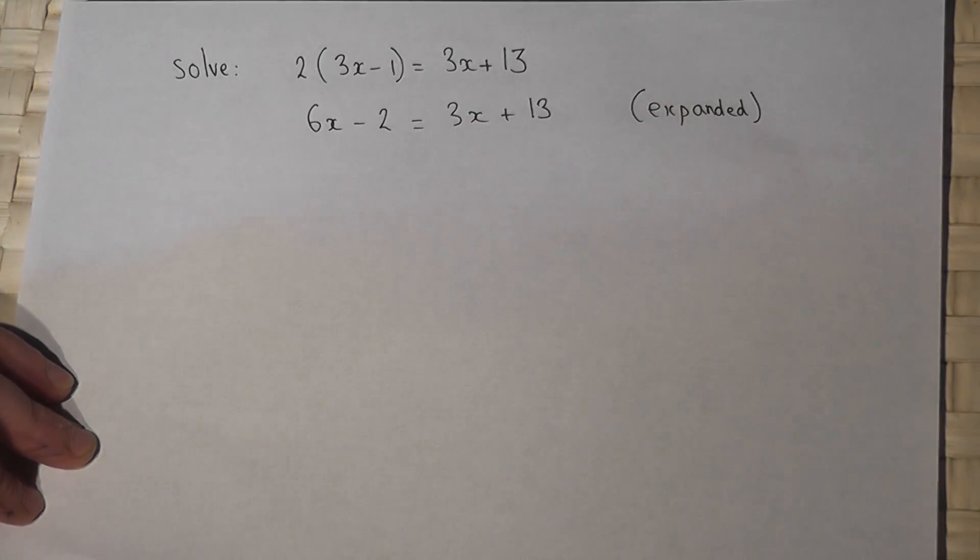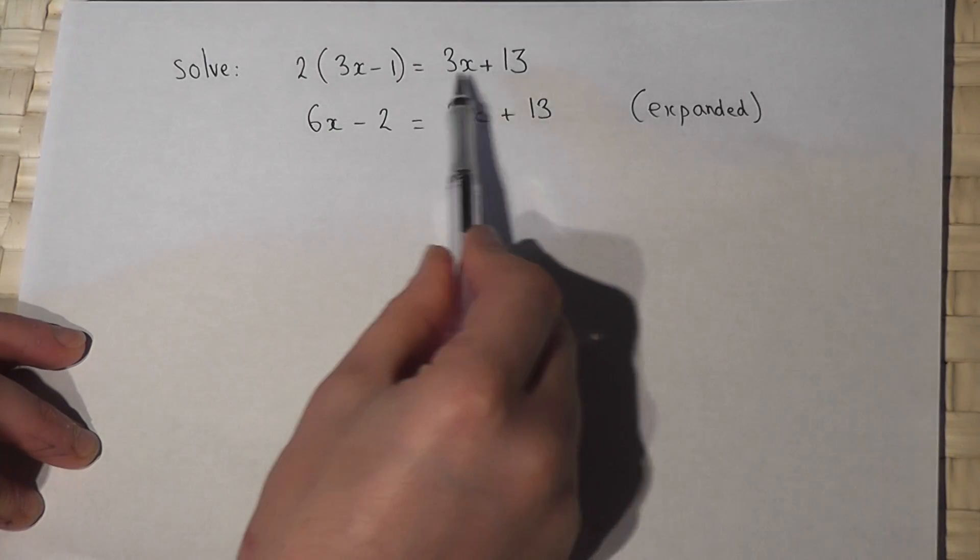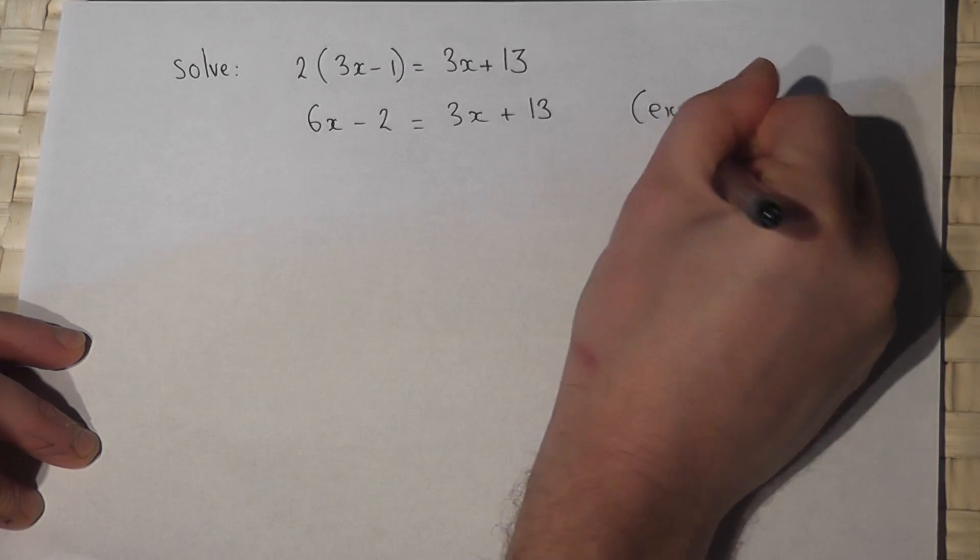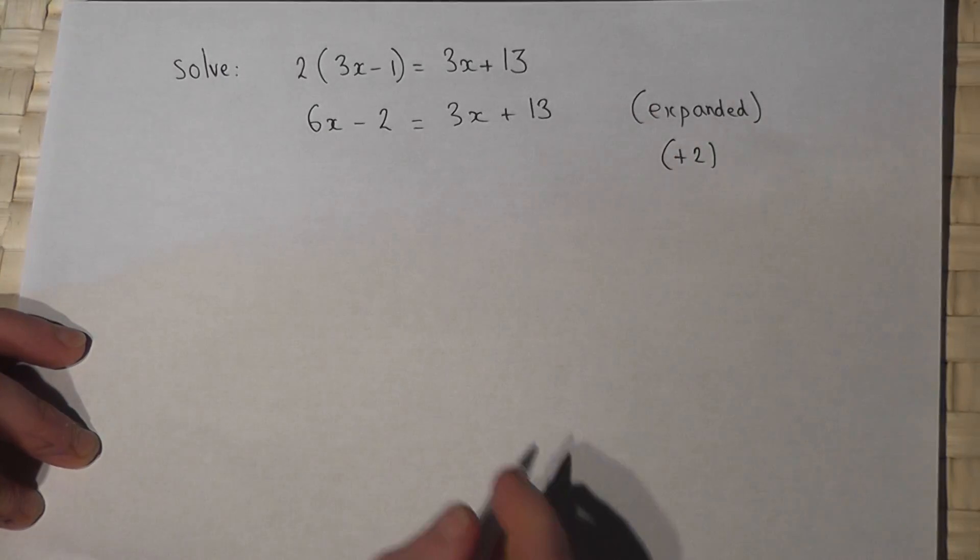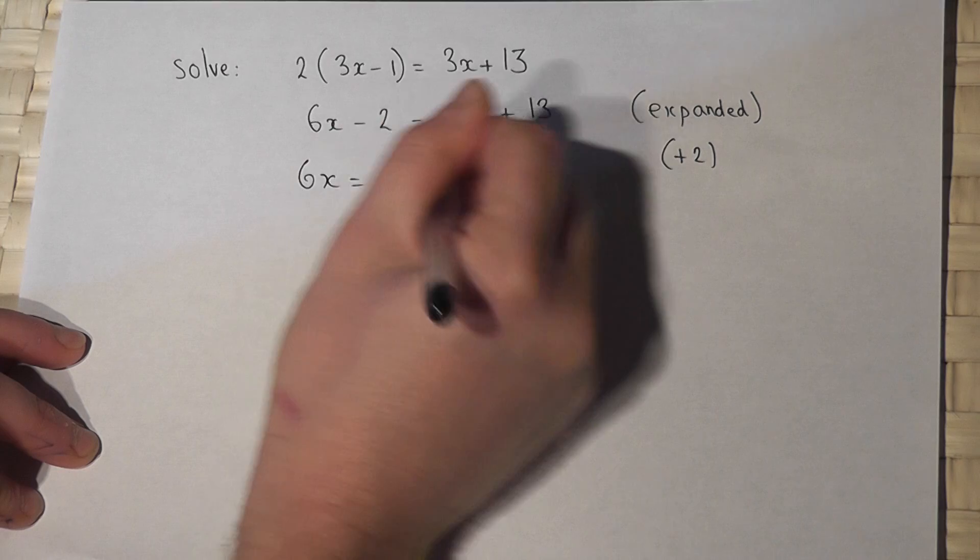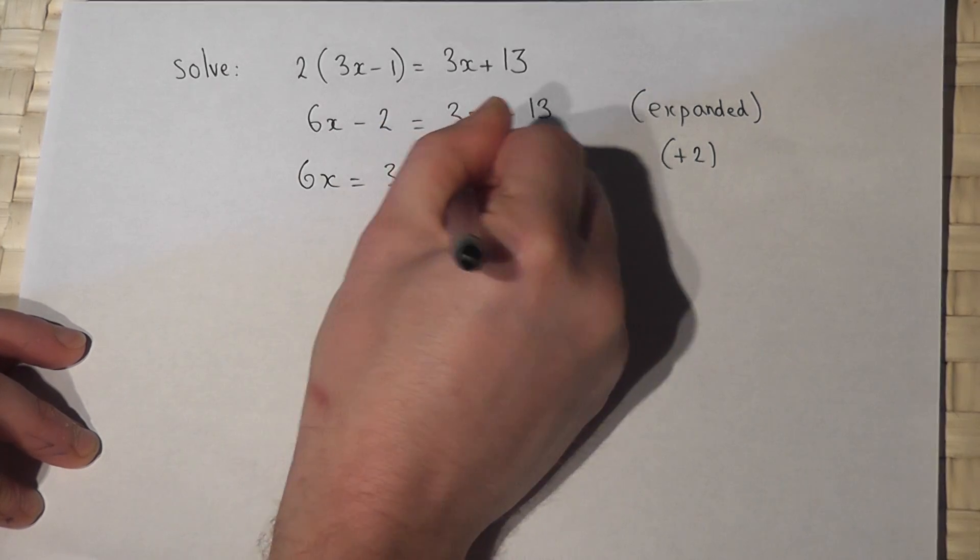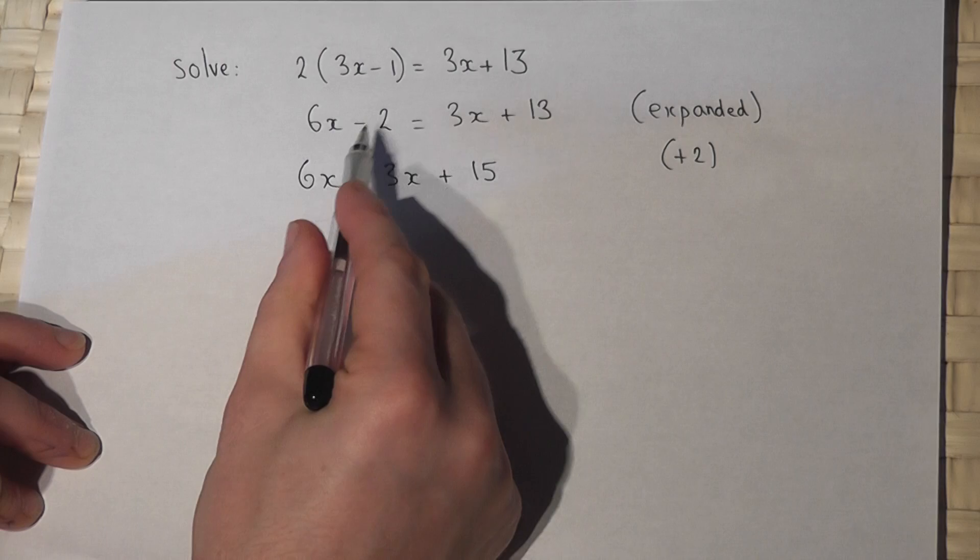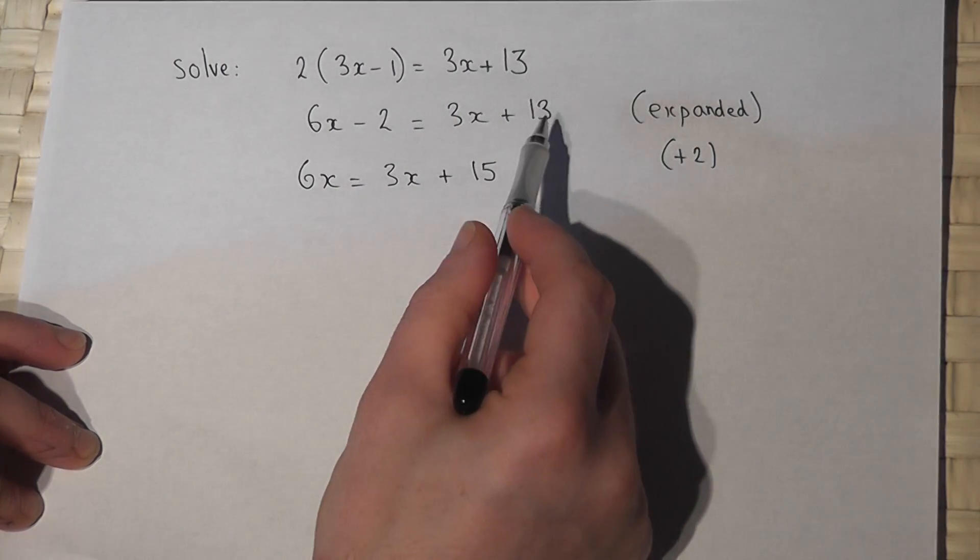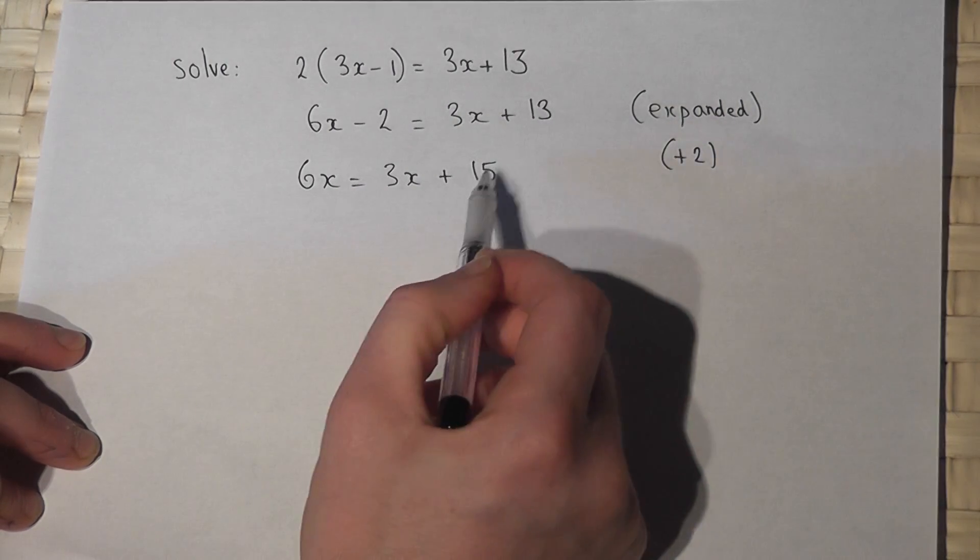Now then my next step will be to add 2 to the other side. So 6x will equal 3x plus 15. When I add 2 the minus 2 cancels out, the 13 becomes plus 2 which is 15.